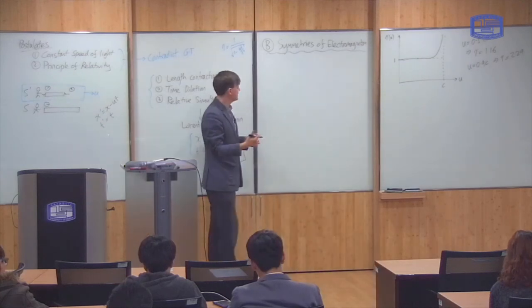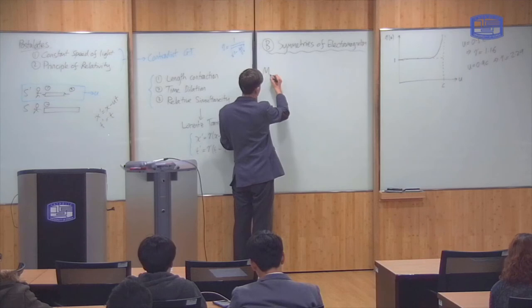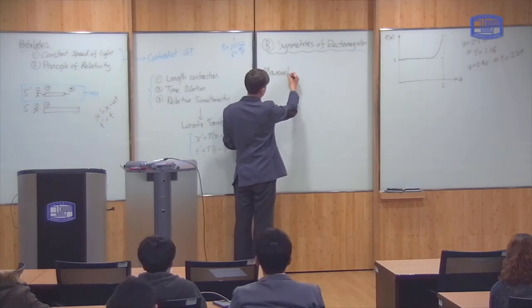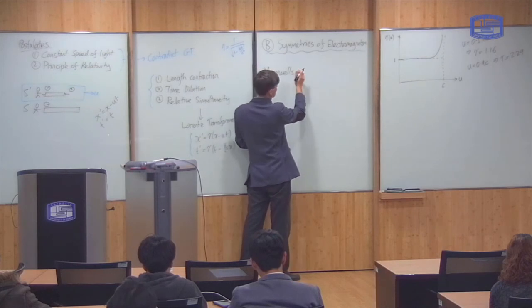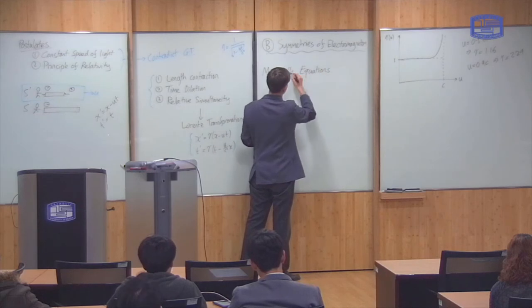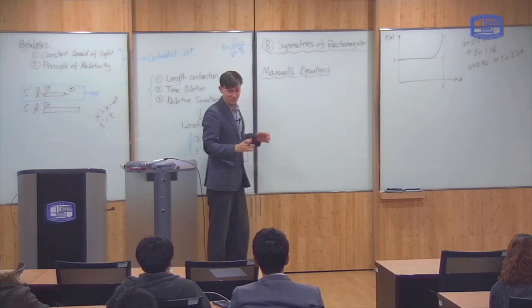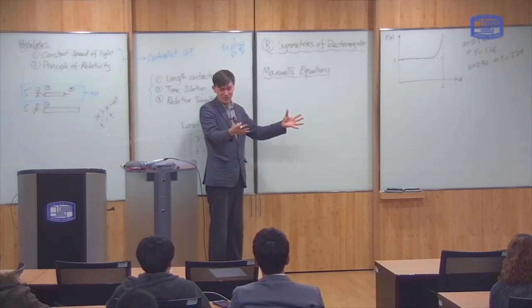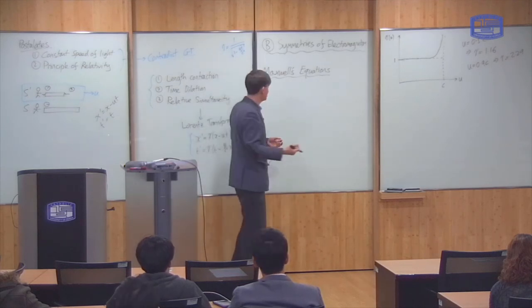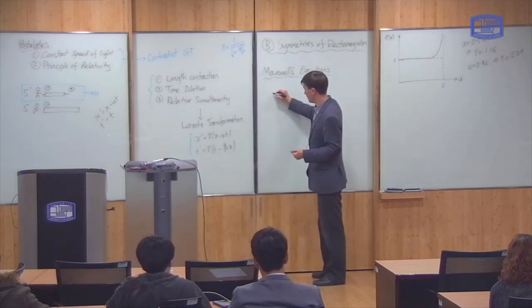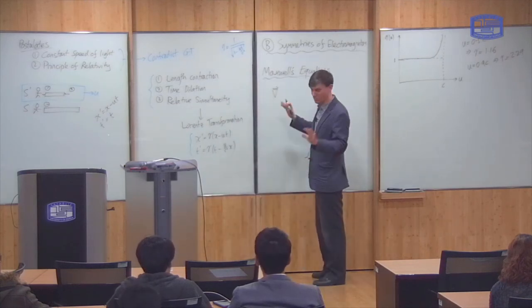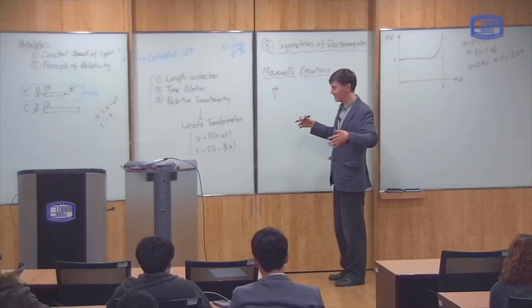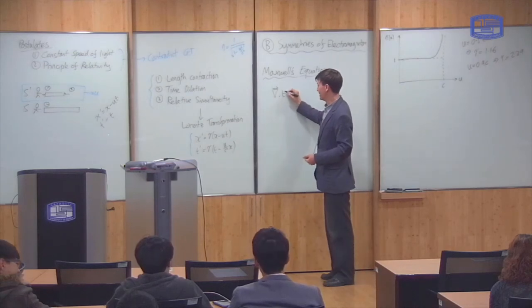So in the second half of the 19th century, the laws of electromagnetism were very well defined, discovered, explained by Maxwell's equations. So Maxwell wrote down a set of equations which characterized everything that they knew about the electric and magnetic forces to that date. So I'll just write them down for reference. If you don't know them, don't worry about it. It's something that you'll see in future physics courses.